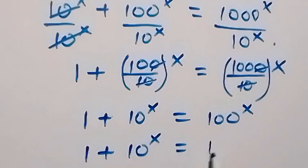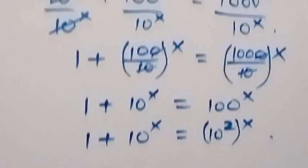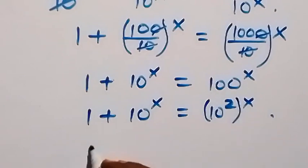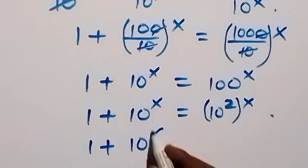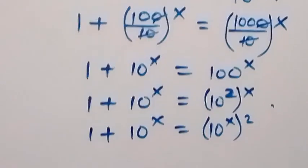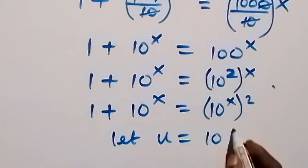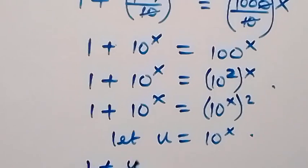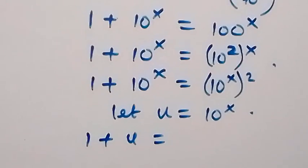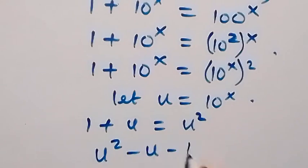We can write 100 as 10 squared, so we have 1 plus 10 raised to power x equals 10 squared raised to power x, which is 10 raised to power 2x. Interchanging the power, this becomes 1 plus 10 raised to power x equals 10 raised to power x all squared. Now let u equal to 10 raised to power x. Then this becomes 1 plus u equals u squared, and rearranging: u squared minus u minus 1 equals to 0.